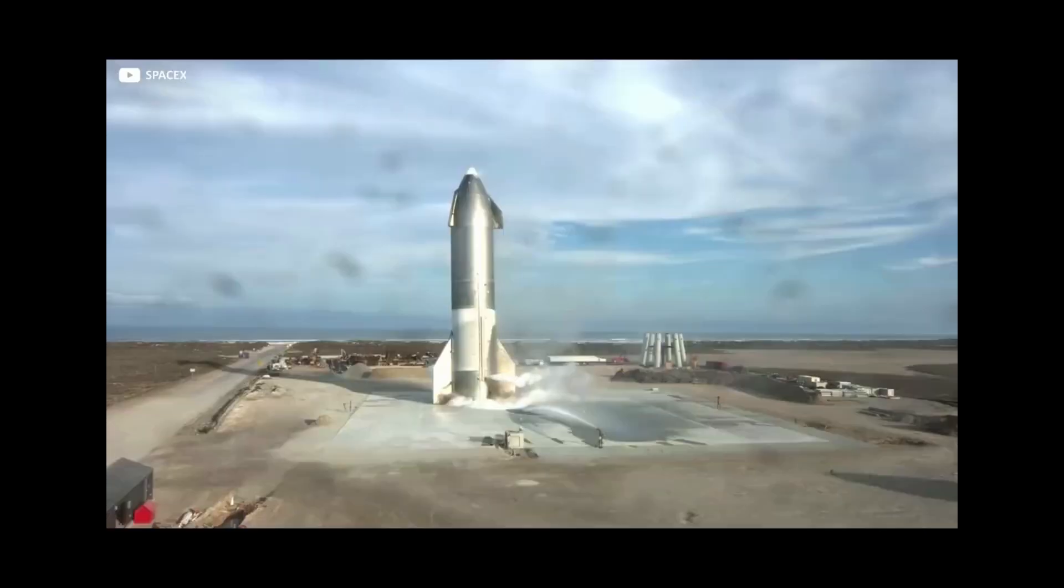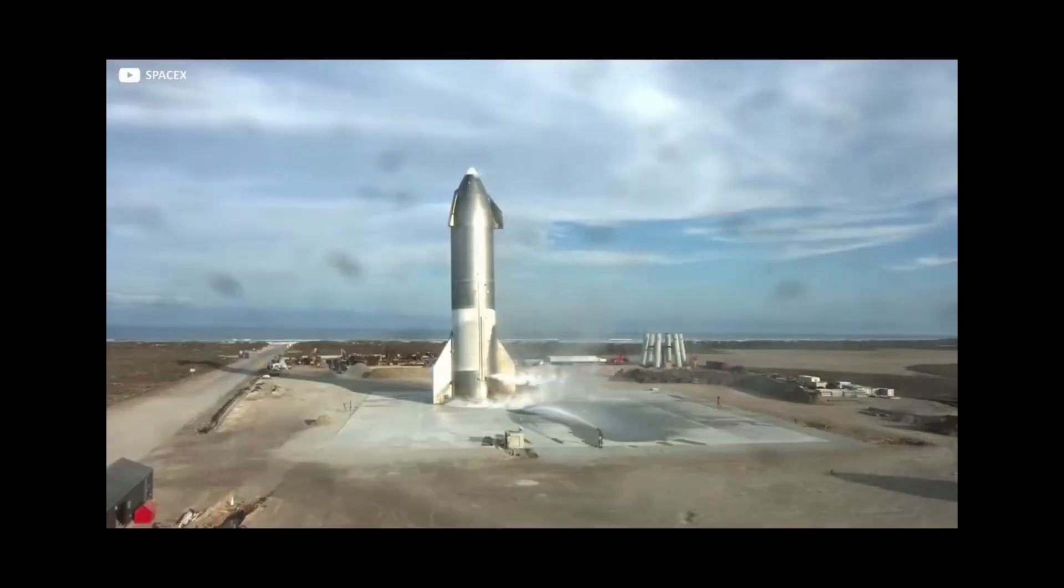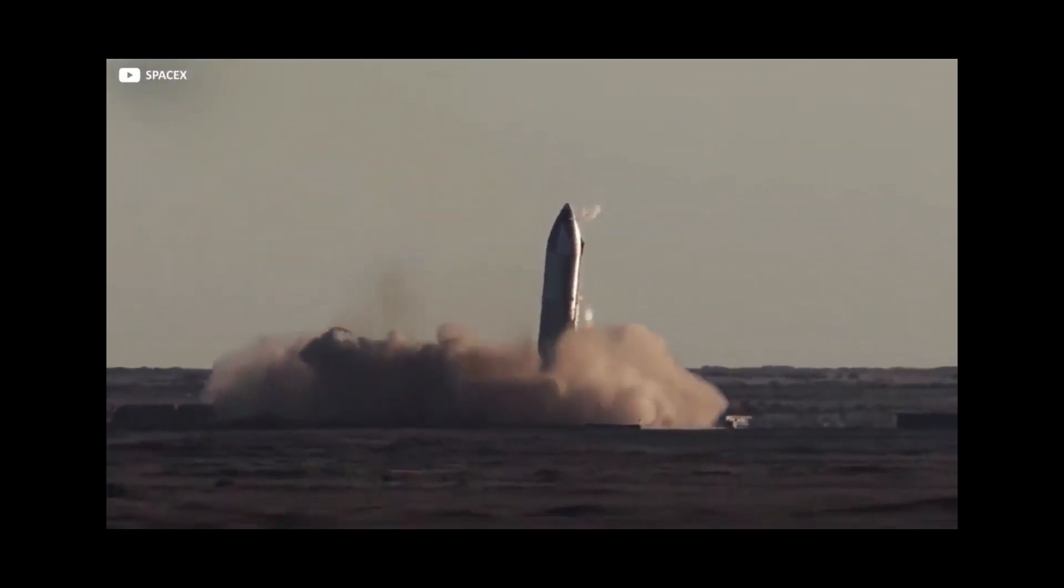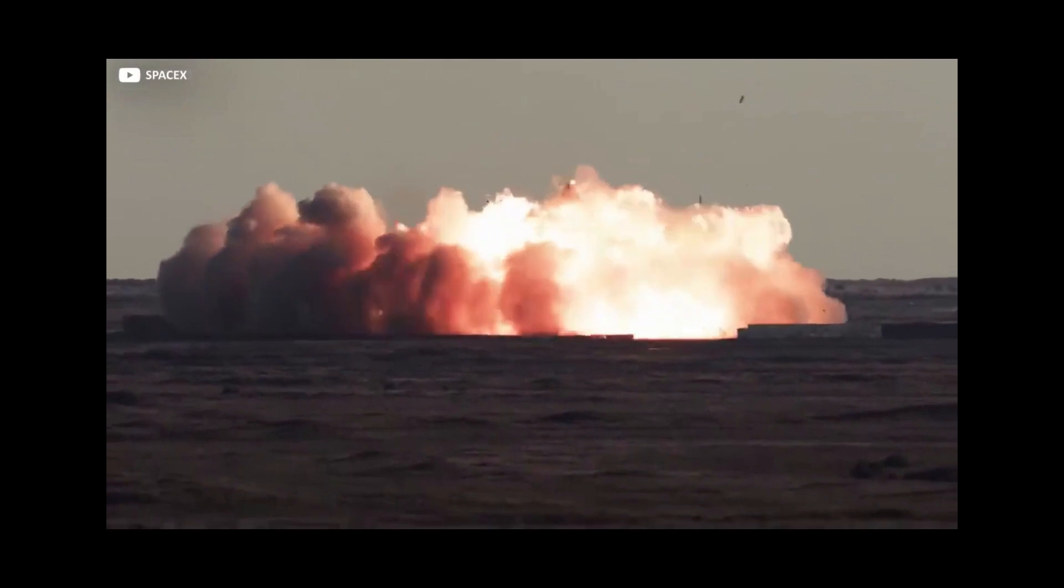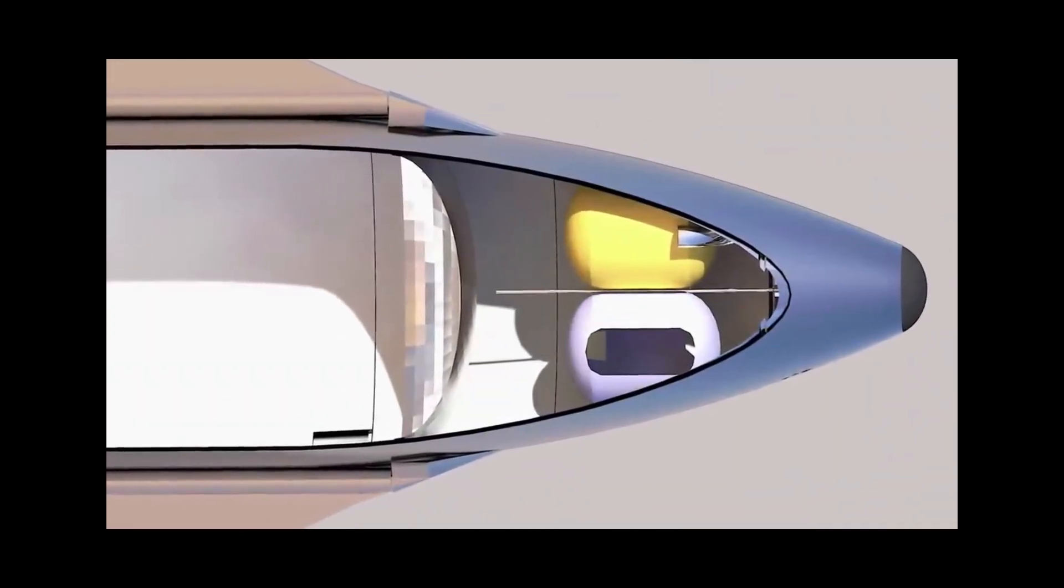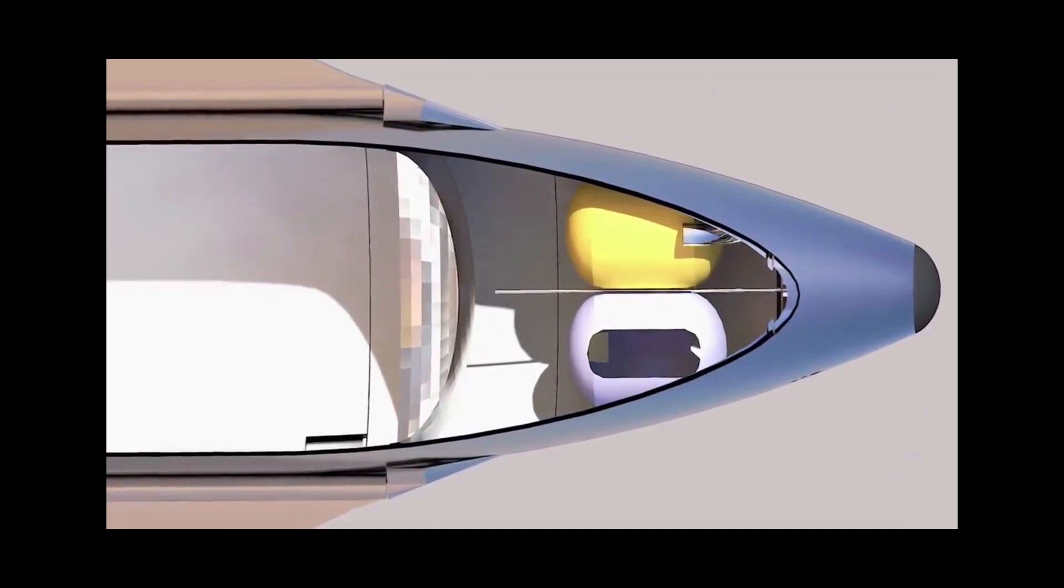Conventionally, oxygen and fuel tanks are separated by two hemispherical domes, wasting precious space in the gaps between. Back to that sphere in the nose cone, which is one of two header tanks on board, the other sitting in the Common Dome we just mentioned, at the interface of the oxygen and methane tanks.